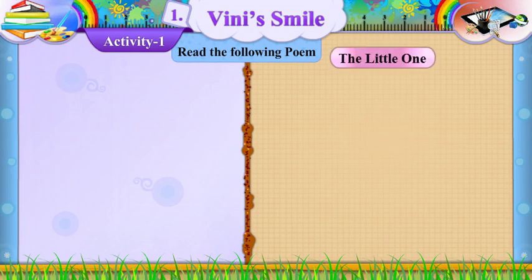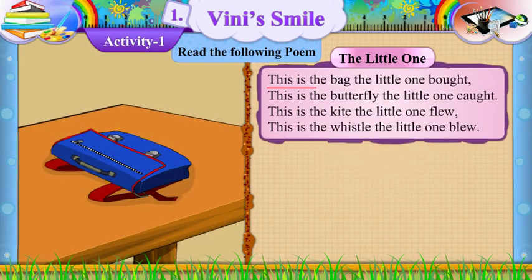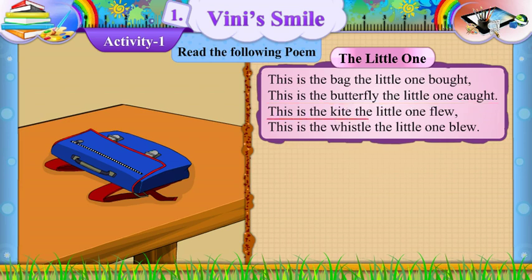The little one. This is the bag the little one bought. This is the butterfly the little one caught. This is the kite the little one flew. This is the whistle the little one blew.